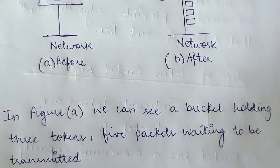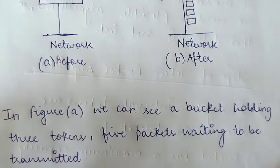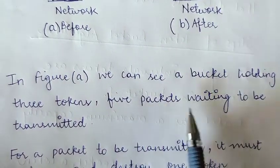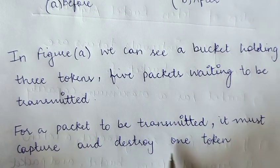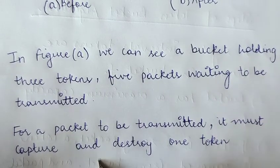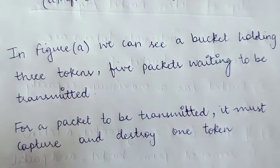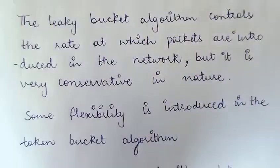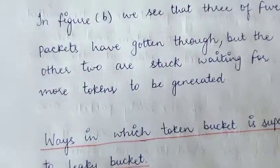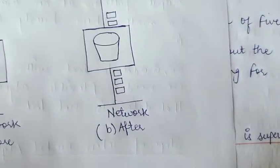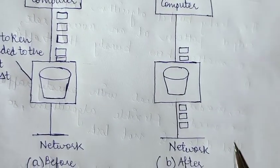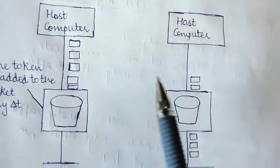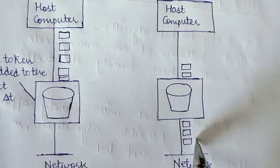The number of tokens equals the number of packets that can be transmitted at any given time. With three tokens and five packets waiting, for a packet to be transmitted it must first capture and then destroy one token. The first packet captures and destroys the first token, the second packet captures and destroys the second token, and so on. In figure b, three of the five packets have gotten through — because there were three tokens, three packets passed through the bucket.